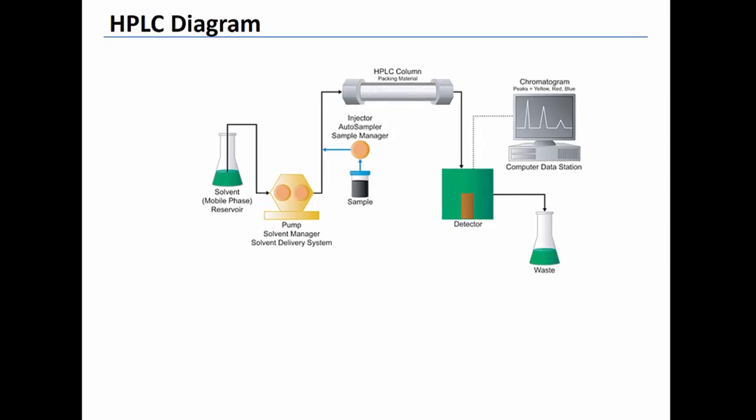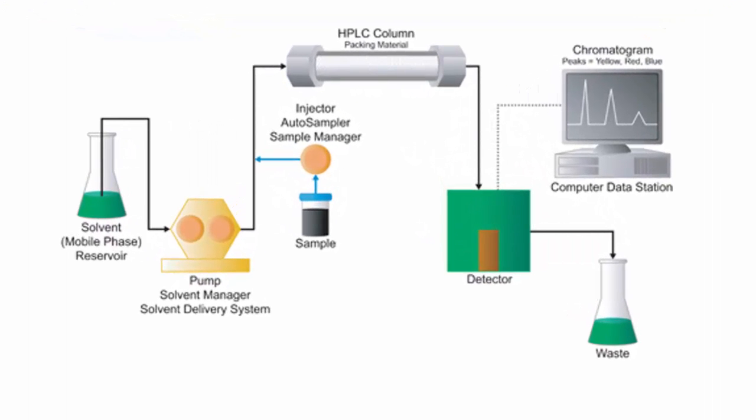The diagram shown on the screen is a schematic of the important components of an HPLC. At the beginning of the diagram are one or more solvents, which are pressurized by a pump. The solvents make up what is called the mobile phase. A small volume of sample is injected into the pressurized mobile phase. The flow of the mobile phase then carries the sample to the HPLC column, where ideally all analytes of interest are separated.